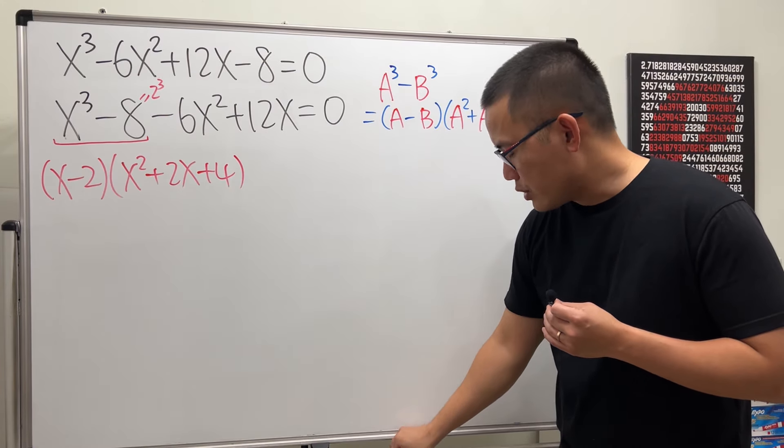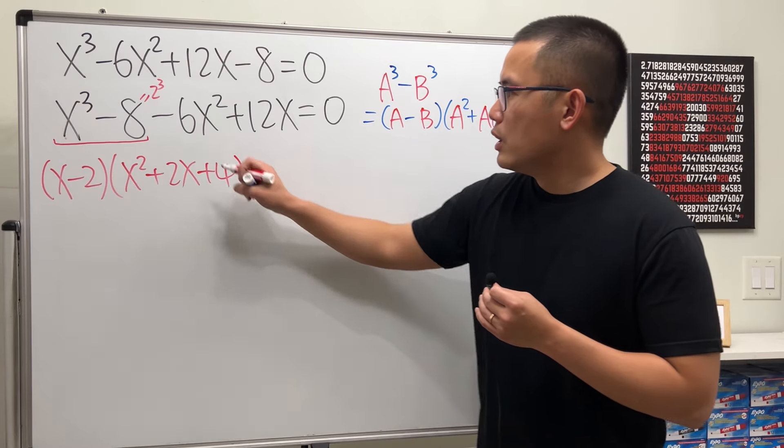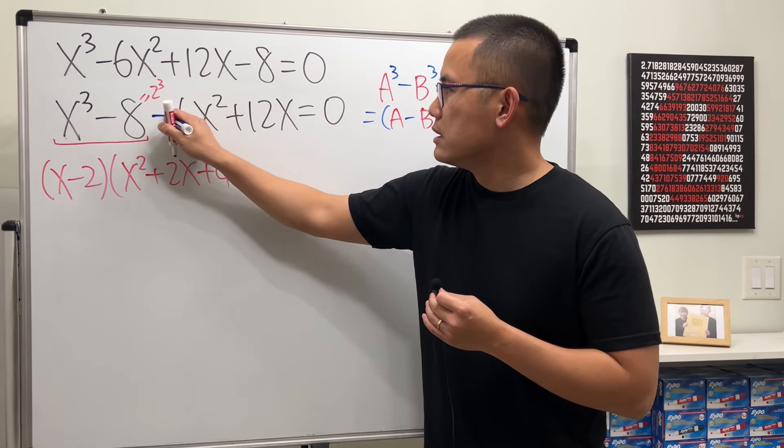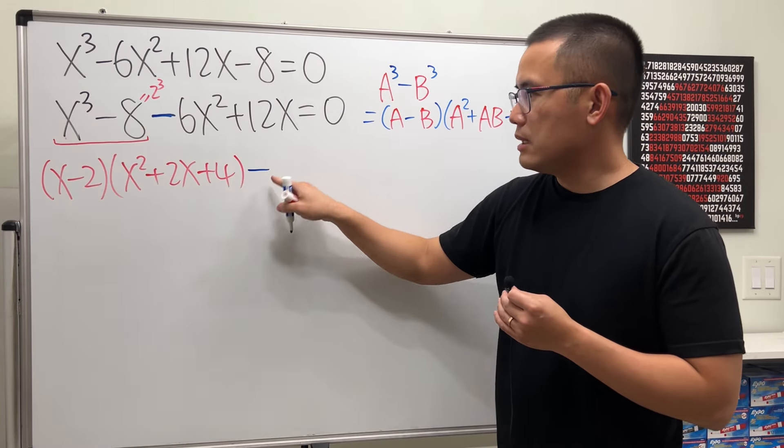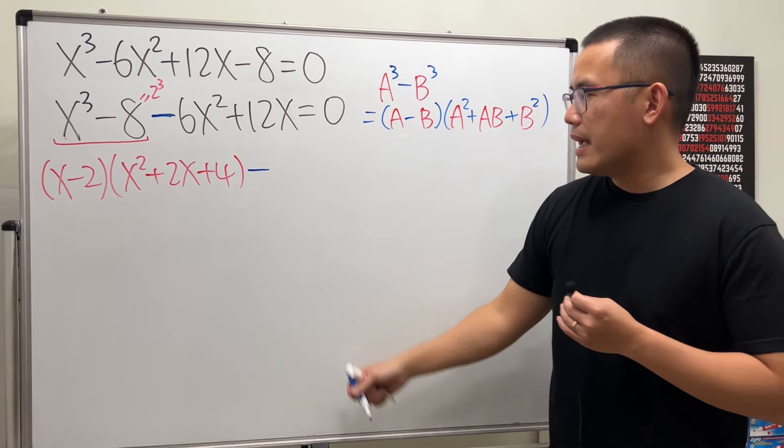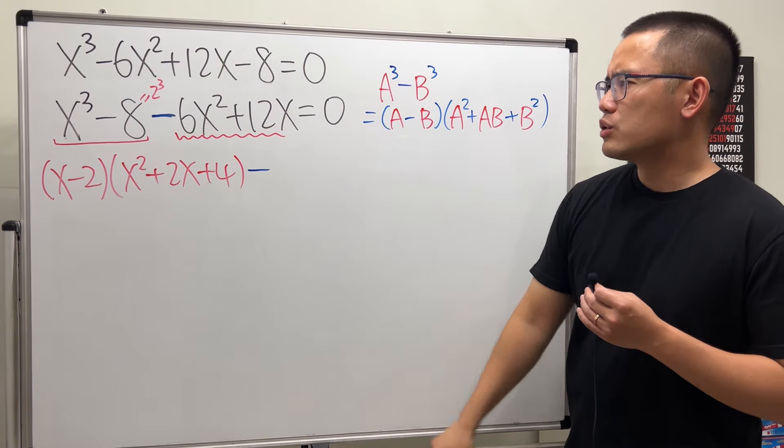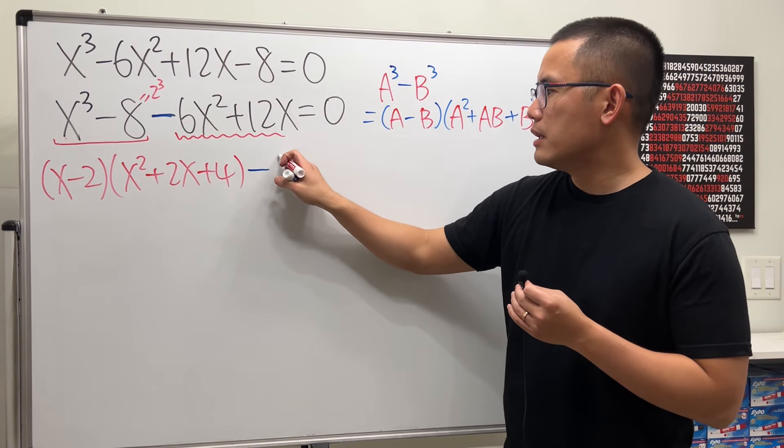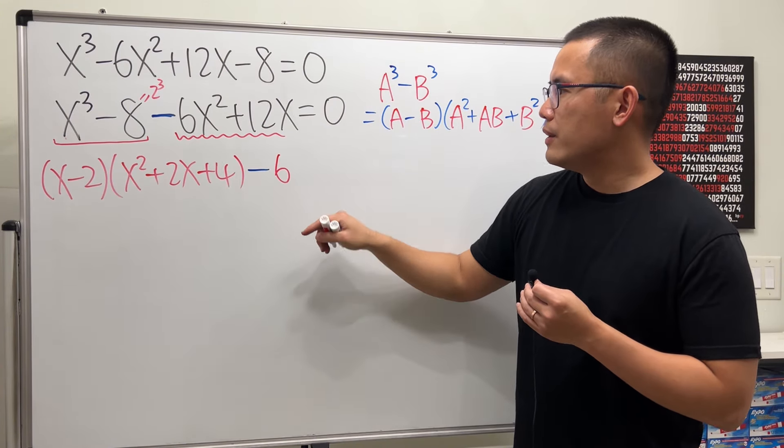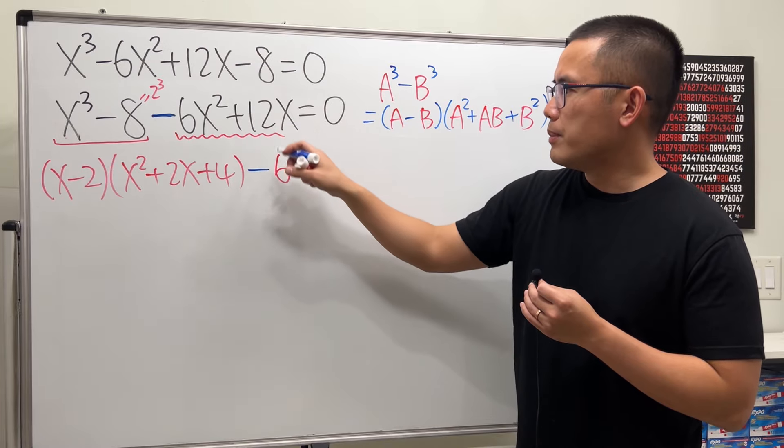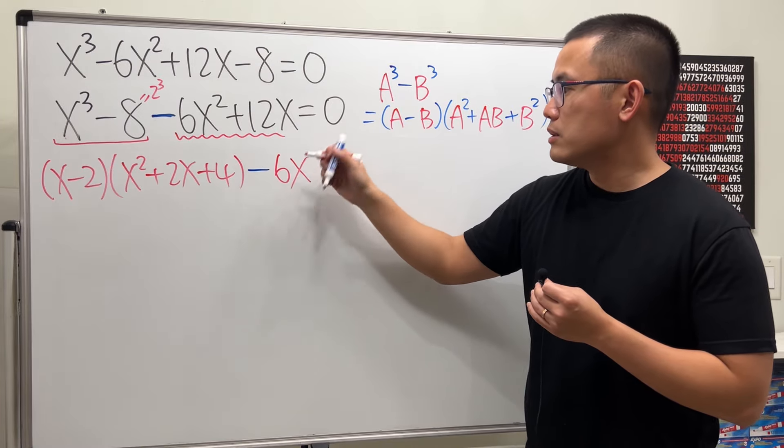Now, for the last two terms, notice here we have a minus. So, let's put on the minus in between right away. And then, we see that we have 6x squared plus 12x. So, for the number, we can factor out a 6. And then, for the variable, we can factor out an x. Just like that.